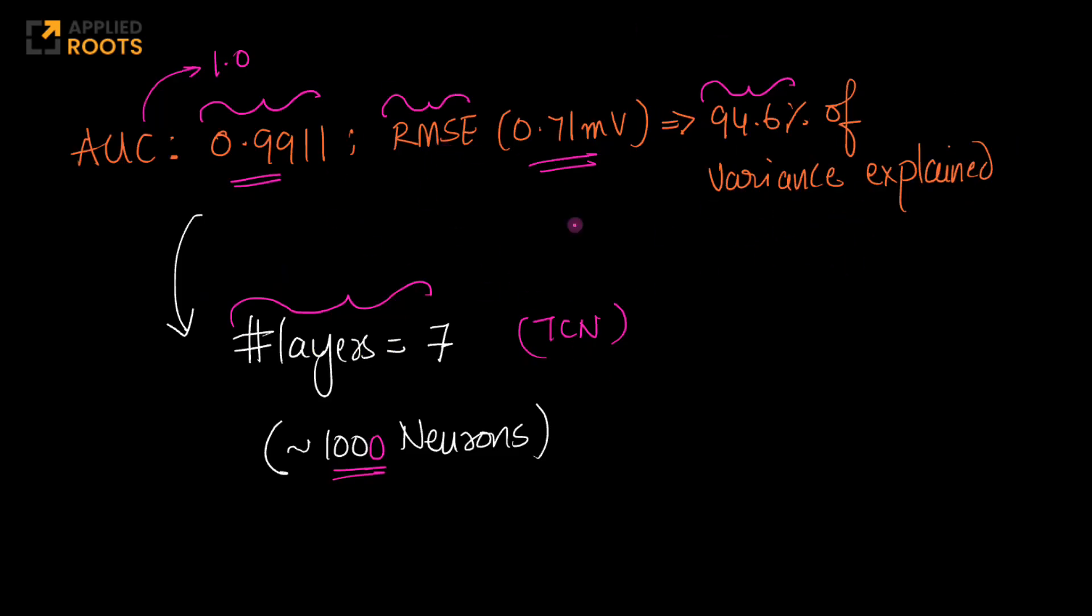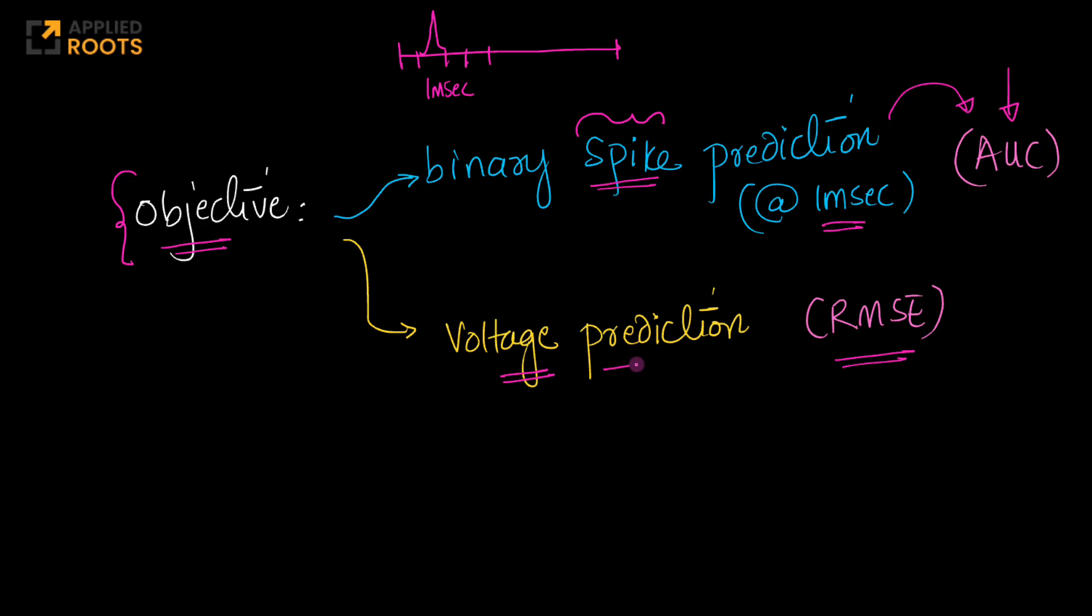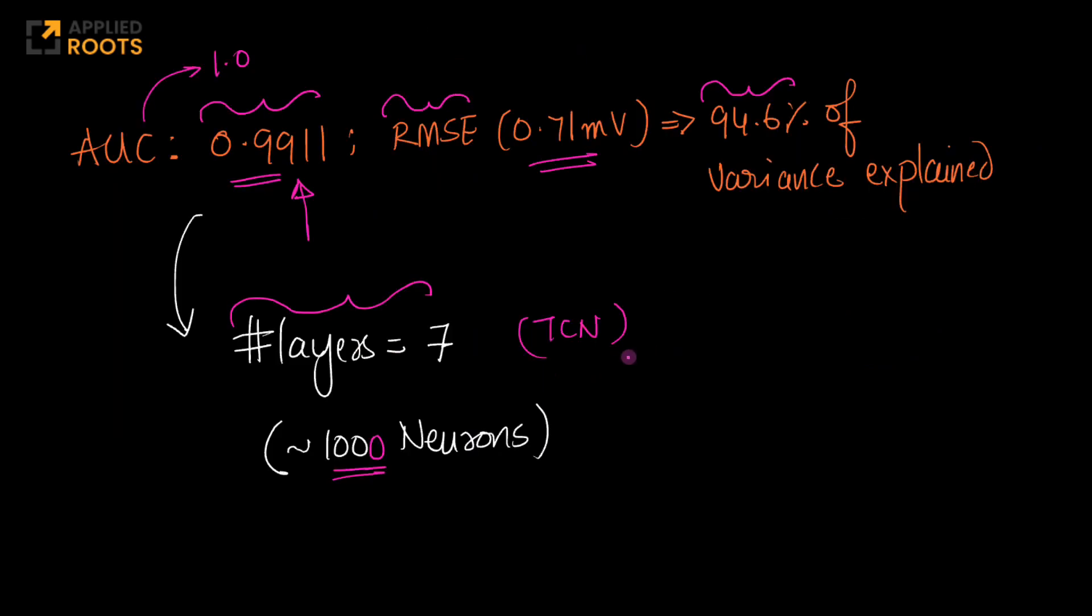They required a temporal convolutional neural network of seven layers. They also experimented with a lot of other structures.